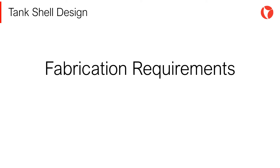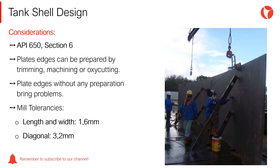To ensure that a storage tank meets the design requirements, it is necessary to follow certain aspects during the fabrication of the tank. For adequate tank fabrication, plates with prepared edges must be used according to the type of welding to be made. Plates should not be welded as they come from the rolling process, as this could lead to problems due to incomplete fusion of the weld. The API 650 code establishes the allowable dimensional tolerances for the plates used for the tank shell, being plus or minus 1.6 millimeters for the length and width of the sheets.